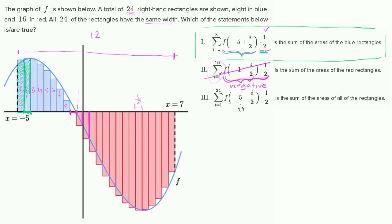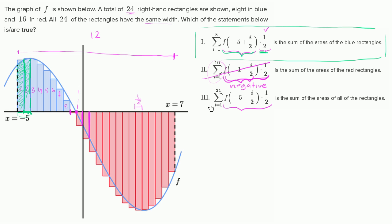Now the last choice: this expression is supposed to be the sum of the areas of all 24 rectangles, going from i equals one to 24. If it went from i equals one to eight, it would be the same as the first choice. But past i equals eight, once we get to i equals nine, this expression turns negative and gives the negative area for those rectangles. So it essentially nets out the positive area against the negative area. It's not the sum of the areas of all the rectangles — it's this positive area minus this negative area right over there.